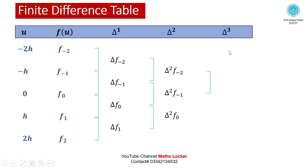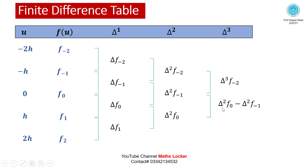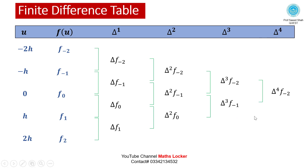Taking the third difference: delta² f(-1) minus delta² f(-2) gives delta³ f(-2); delta² f(0) minus delta² f(-1) gives delta³ f(-1). Taking the fourth difference: delta³ f(-1) minus delta³ f(-2) gives delta⁴ f(-2).